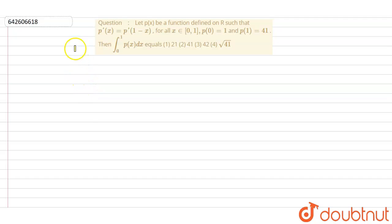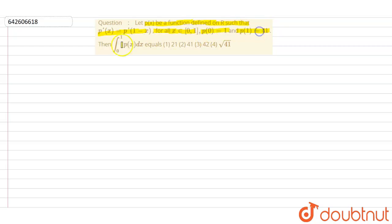Hello everyone, I am the teacher for this question. The question is: let p(x) be a function defined on R such that p'(x) equals p'(1 minus x) for all x belonging to the closed interval 0 to 1, p(0) is equal to 1 and p(1) is equal to 41. We need to find the integration of 0 to 1 of p(x) dx. The options are: option 1: 21, option 2: 41, option 3: 42, and option 4: square root of 41.